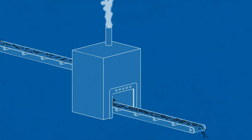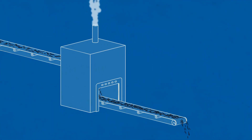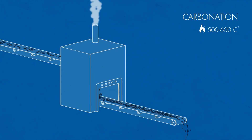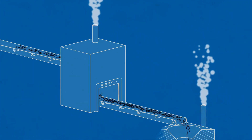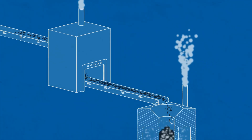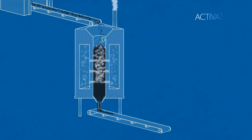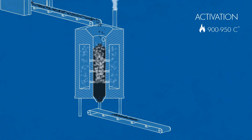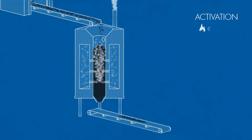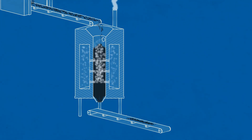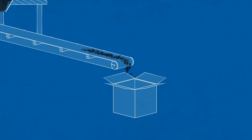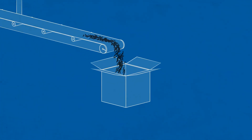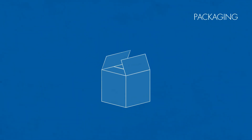The subsequent stages are carbonation of the pellets at a temperature of 500 to 600 degrees Celsius and their activation at a temperature of 900 to 950 degrees Celsius. The production process is completed by sieving of the semi-finished product with the release of the desired cut, and packaging of the finished product.